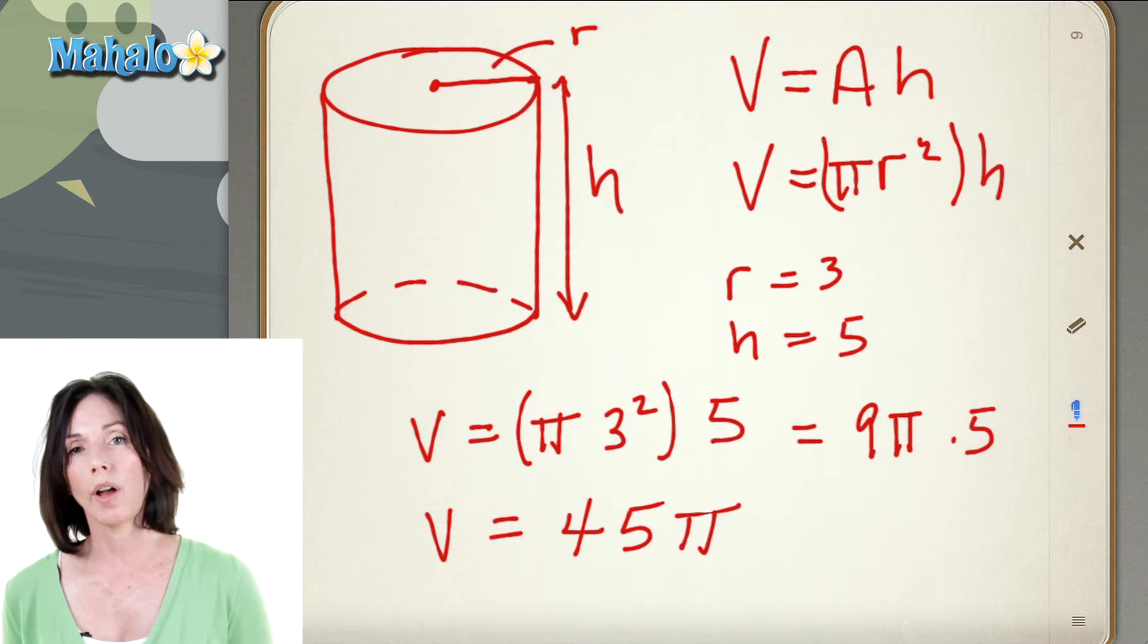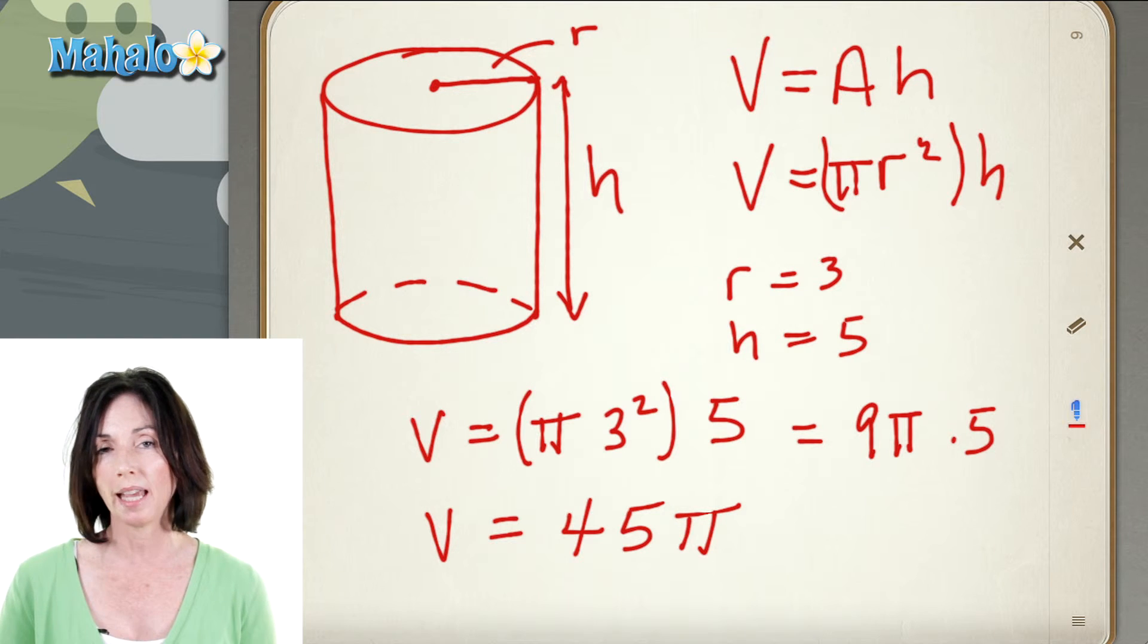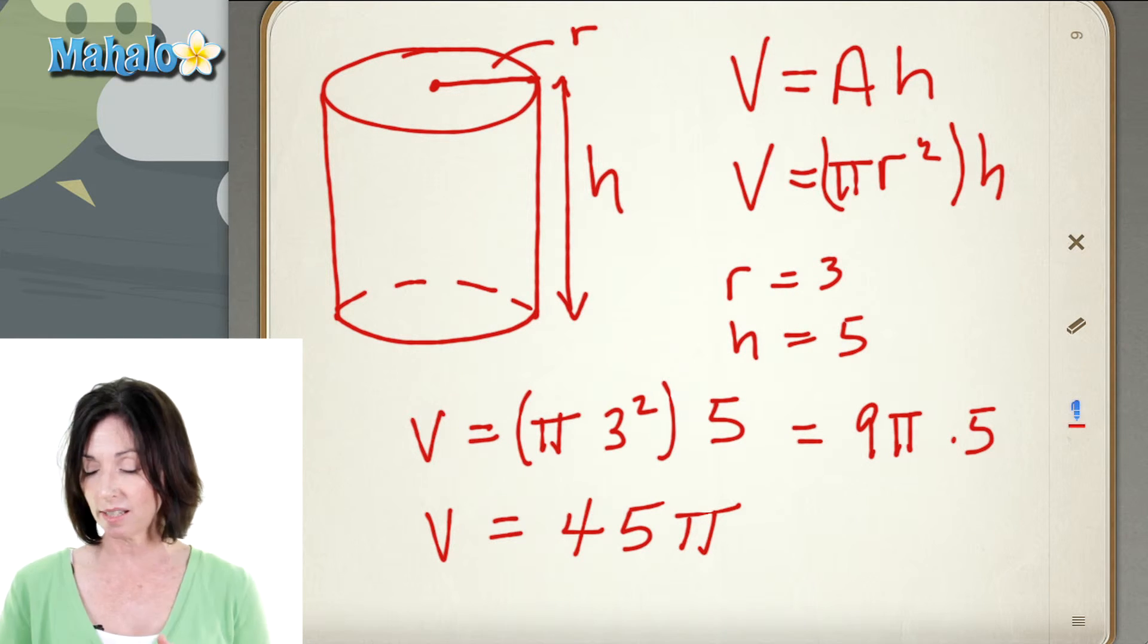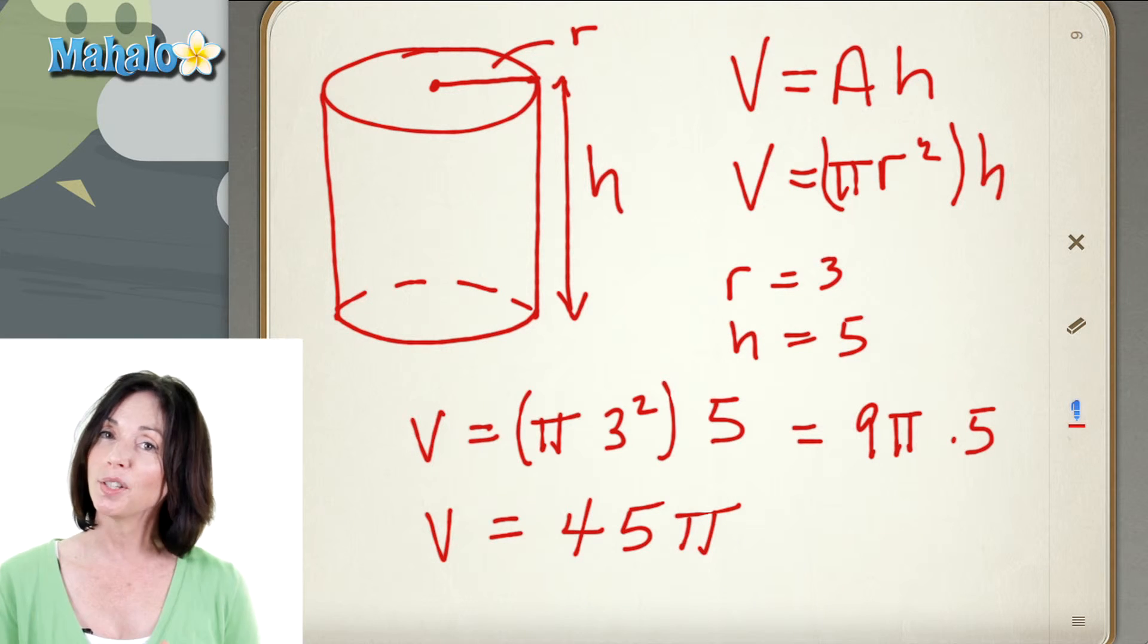And if you wanted to find an approximation to that, you could approximate pi as 3.14 and do the multiplication. But the exact volume of this cylinder is 45 pi. That's how you calculate the volume of a cylinder.